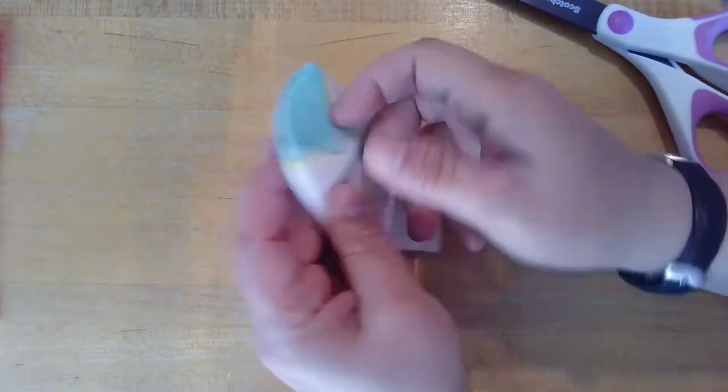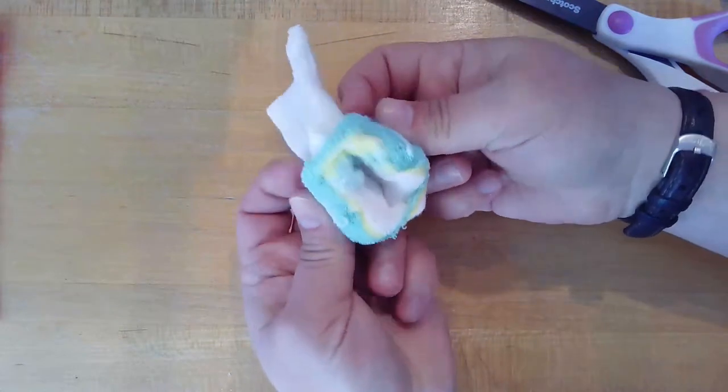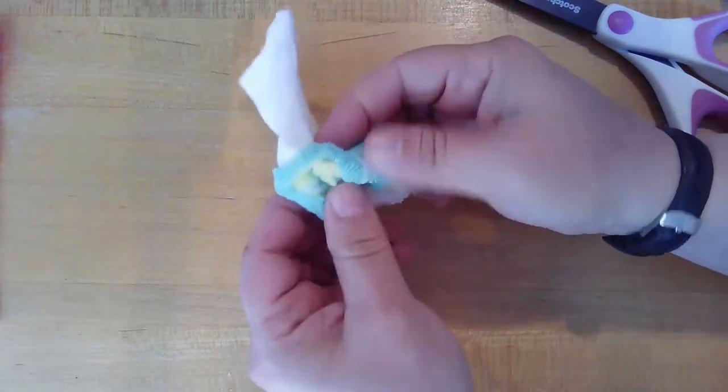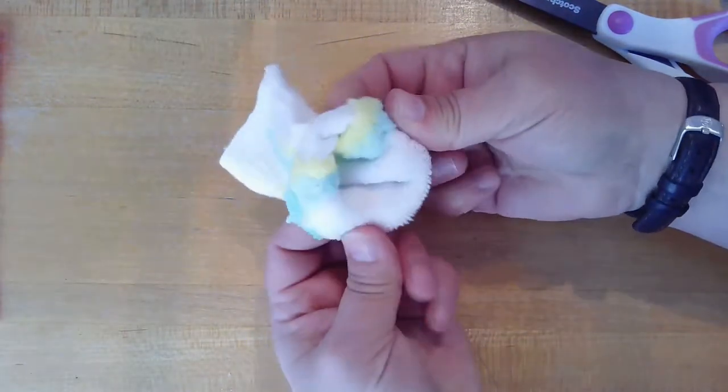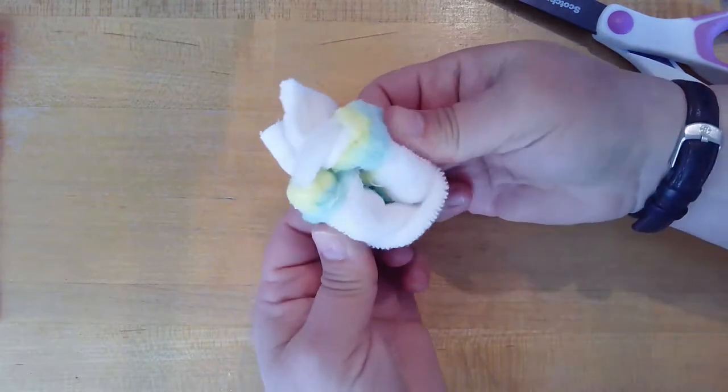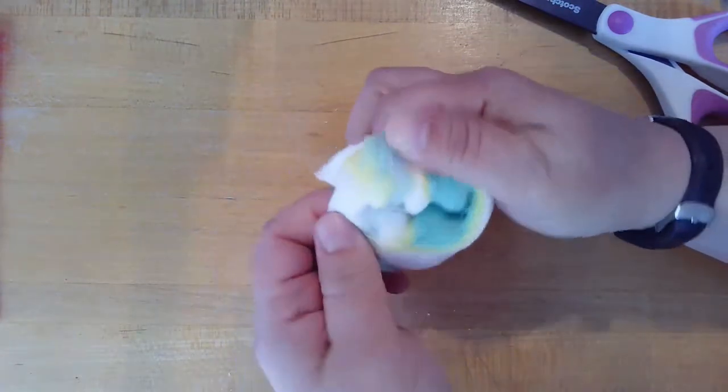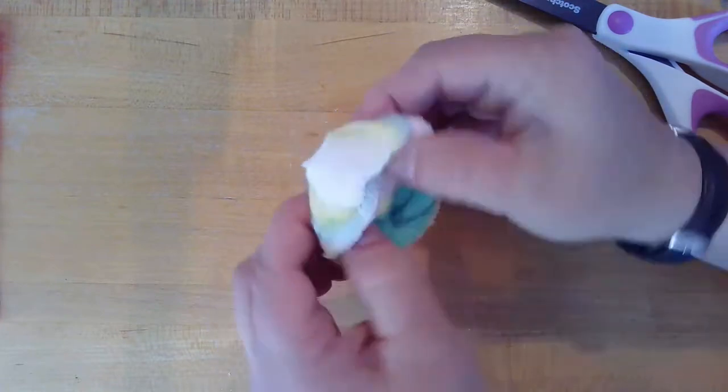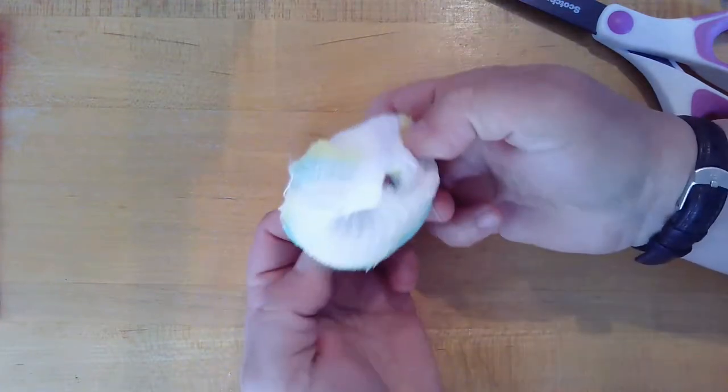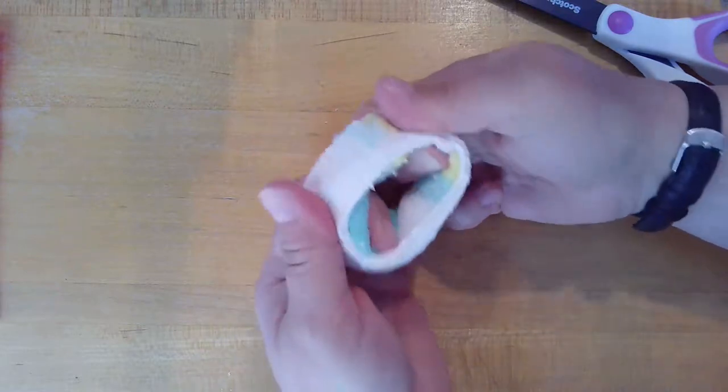Now, starting at the toe end, you're going to start rolling it inside out to make your donut shape. Like that. Keep rolling until you get to the outer edge of the top of the sock.